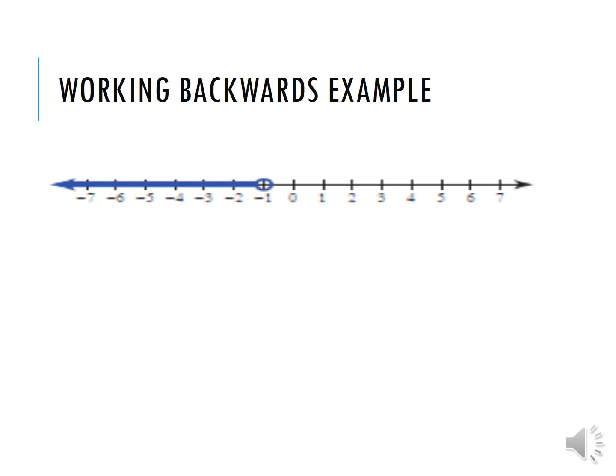Let's try this example that is working backwards. Can you write the inequality that is shown here? We have an open circle so it's non-inclusive of negative 1 and we're going down. So x, choose any variable you want, is less than negative 1.